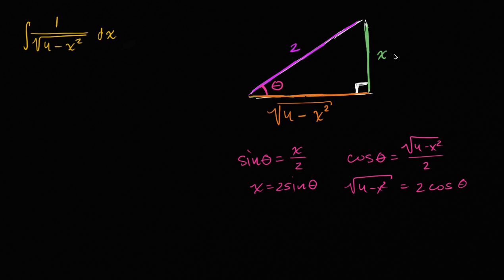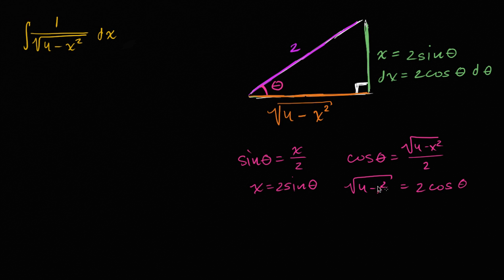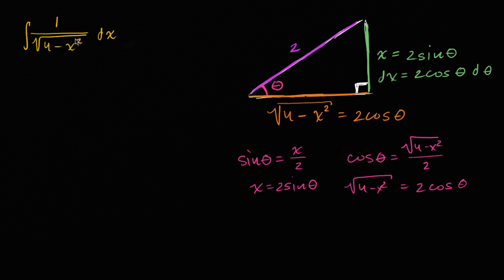So let's make the substitution: let x equal two sine theta. Then dx equals two cosine theta dθ, and the square root of four minus x squared becomes two cosine theta. You could also arrive at this using the Pythagorean trigonometric identity, which would likewise simplify that entire expression to two cosine theta.